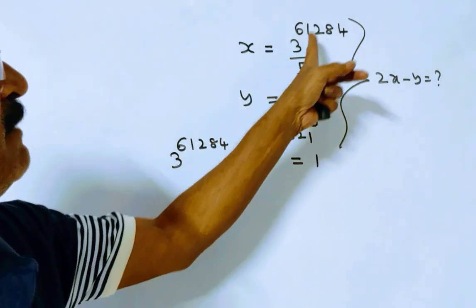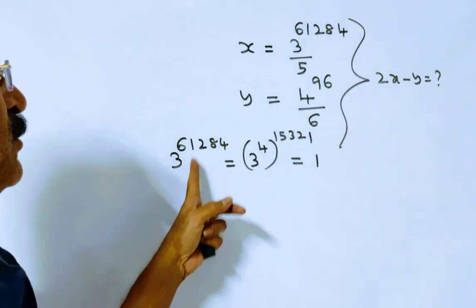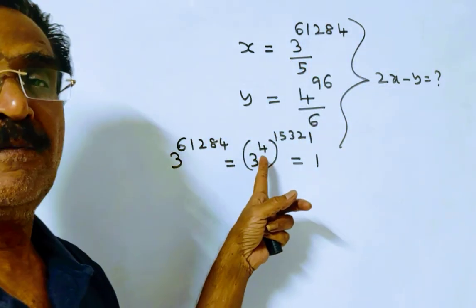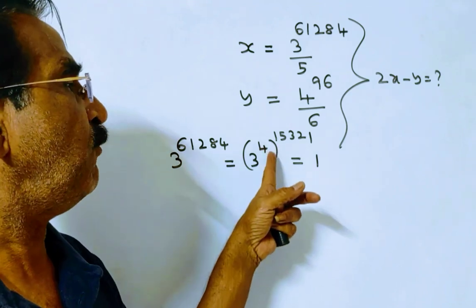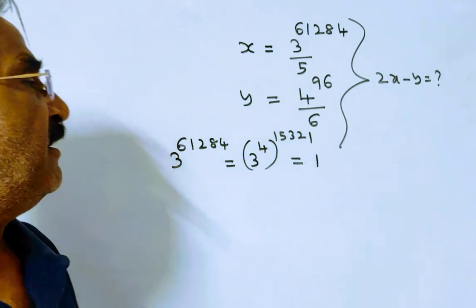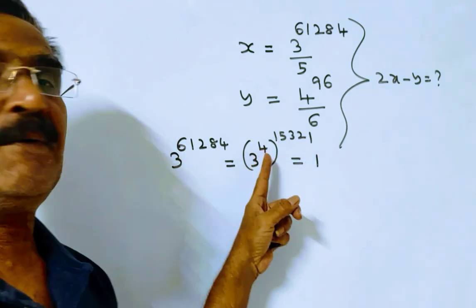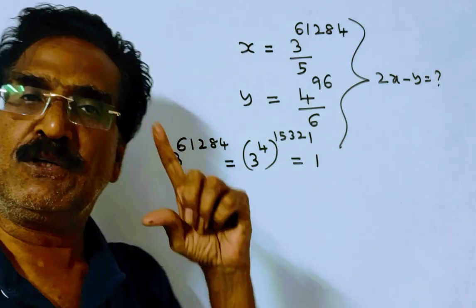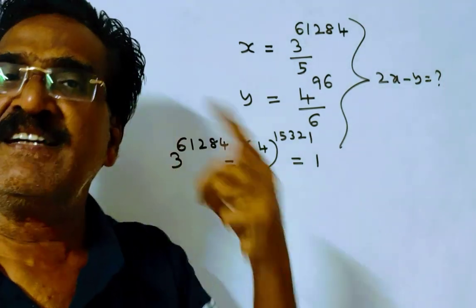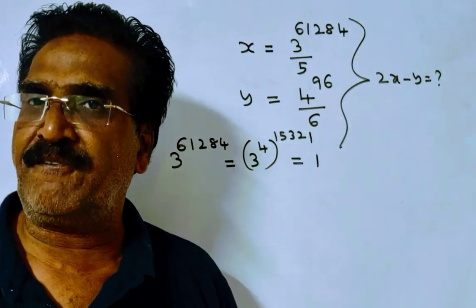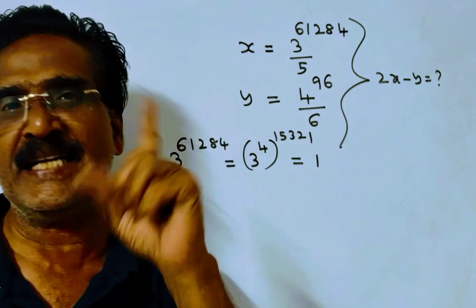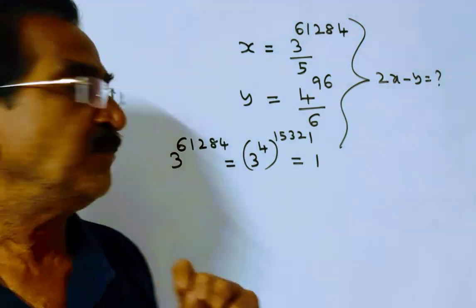Friends, 3 power 61284 is equal to 3 power 4, whole power 15321. Friends, 3 power 4 is equal to 81. When 81 is divided by 5, 5 sixteens 80, the remainder is 1.